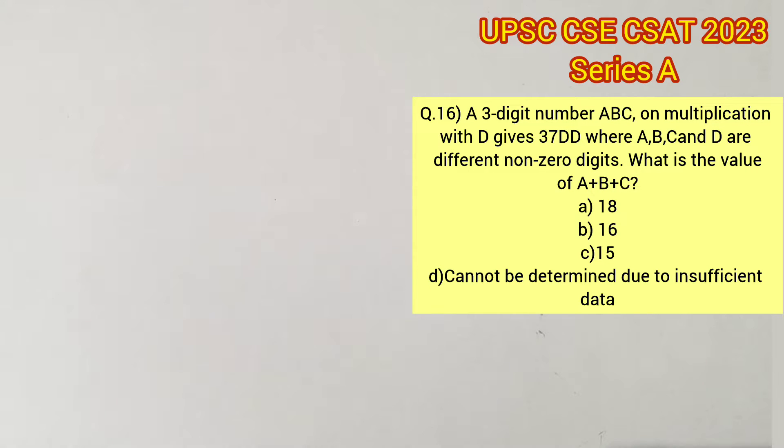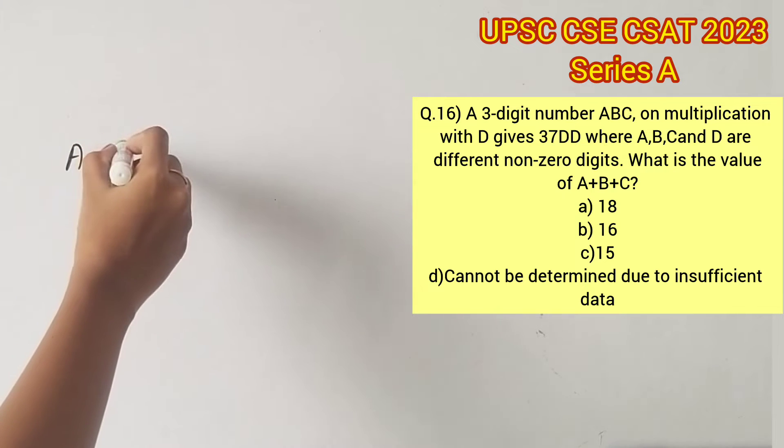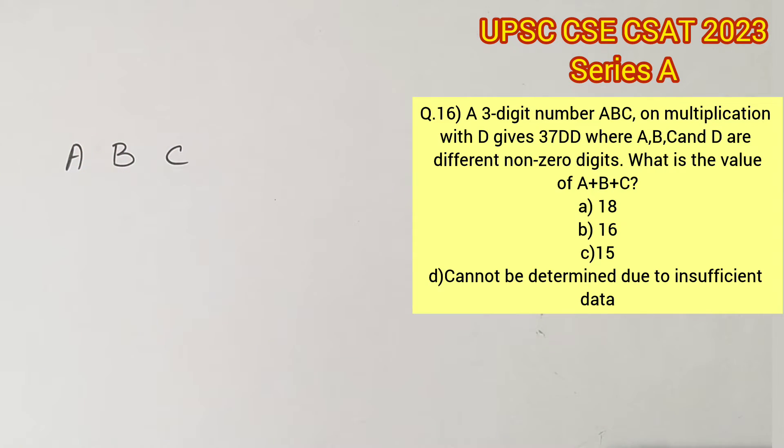Welcome to aptitude destination. Please pause the video and read the question completely. A three-digit number ABC on multiplication with D gives 37DD, where ABC and D are different non-zero digits. Now we are supposed to find the sum of A, B, and C.